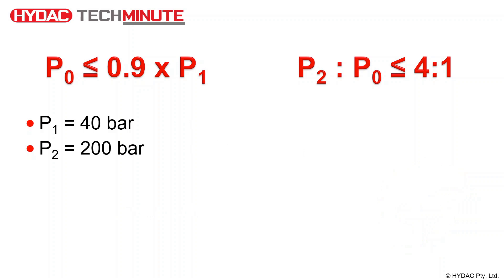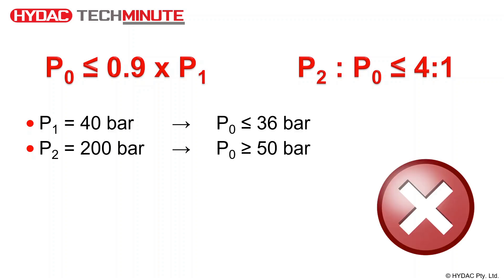Using the same method, we can determine the pre-charge pressure using the minimum system pressure of 40 bar and a maximum system pressure of 200 bar. We can see that when calculated, the pre-charge pressure would need to be less than or equal to 36 bar, but at the same time greater than or equal to 50 bar. Clearly, this isn't possible and in this scenario, an adjustment to the minimum and maximum system pressures or change in accumulator type may be required.